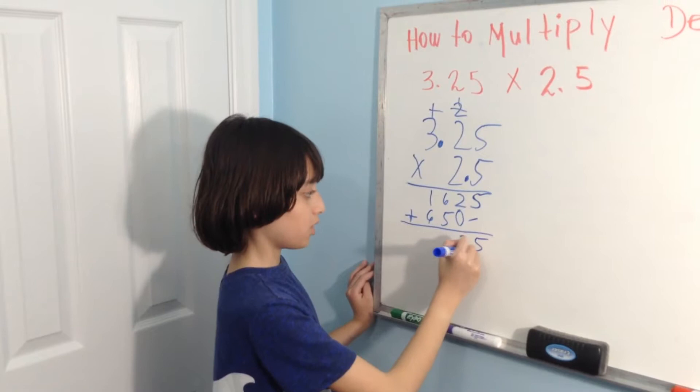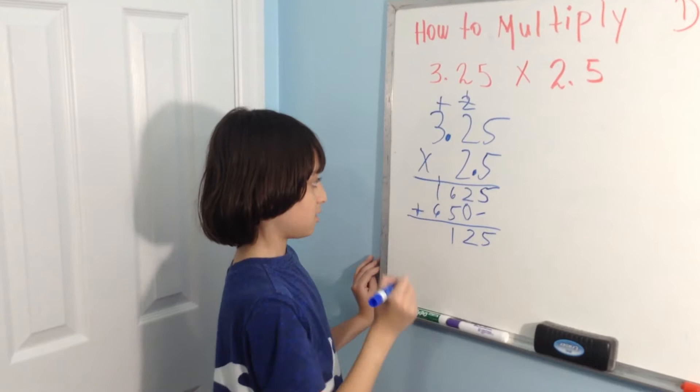6 plus 5 is 11. So, 1 plus 6 is 7, plus 1, which is 8.